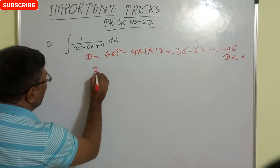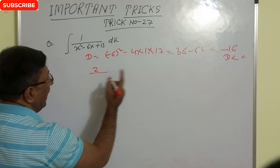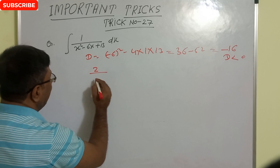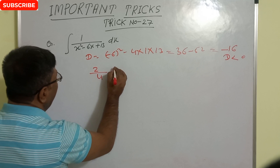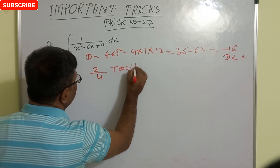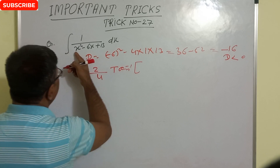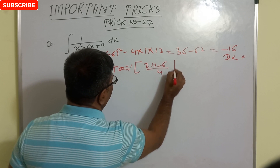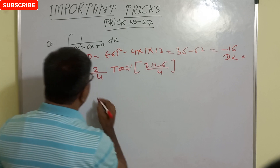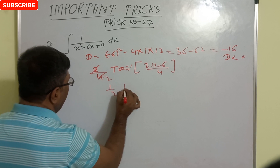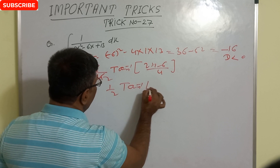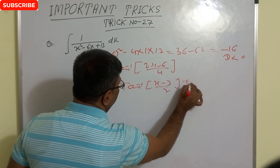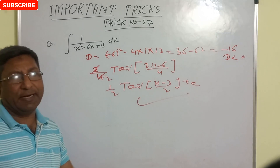When D is less than 0, directly apply: 2 upon square root of the positive value of D. Root 16 — take positive only — root 16 is 4. Then this is tan inverse of the derivative of (2x minus 6) upon 4, so this is one-half tan inverse of (x minus 3) by 2. This is your correct answer.